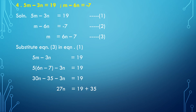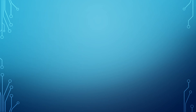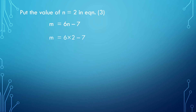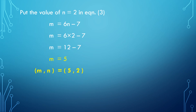Taking minus 35 to the right side it becomes plus 35. So 27n equals 19 plus 35, which is 54. Hence n equals 54 divided by 27, so n equals 2. Now put n equal to 2 in equation number 3: m equals 6 times 2 minus 7, equals 12 minus 7, so m equals 5. Hence the solution of the simultaneous equations is m equals 5 and n equals 2.